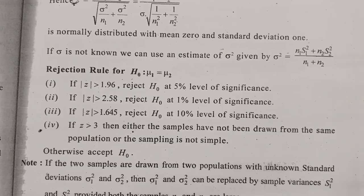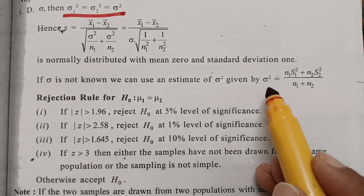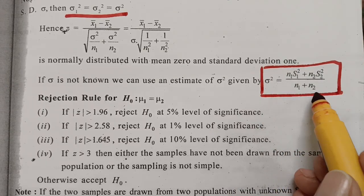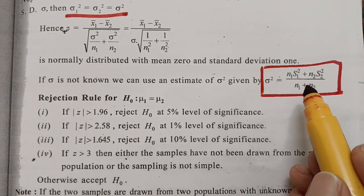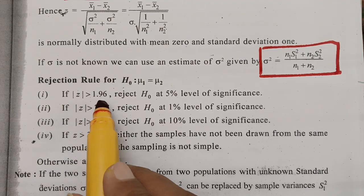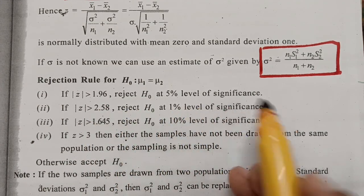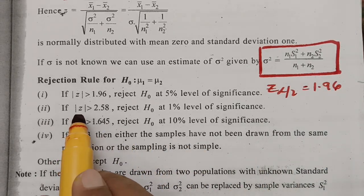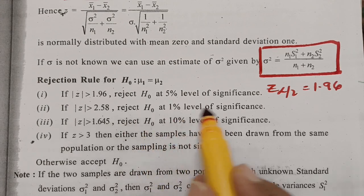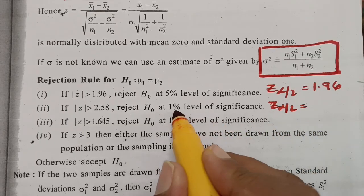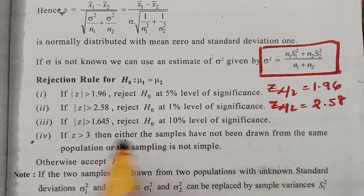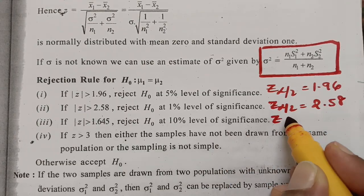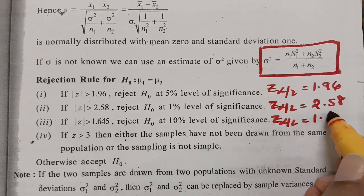The rejection rules are also very important. If s1 and s2 are given, σ² can be found using: σ² = (n1·s1² + n2·s2²) / (n1 + n2). For rejection: if the calculated value is greater than 1.96, reject H0 at 5% level of significance, so z(α/2) = 1.96. If calculated value is greater than 2.58, reject H0 at 1% level of significance, so z(α/2) = 2.58. If calculated value is greater than 1.645, reject H0 at 10% level of significance, so z(α/2) = 1.645.